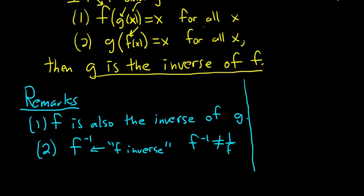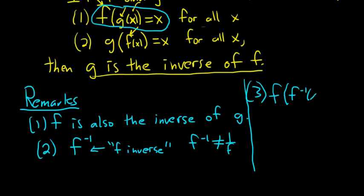The third remark is that we can rewrite our definitions using this notation. So the first condition would become f(f^(-1)(x)) = x. And now you can see it's almost like they cancel. The notation is intentional to give that illusion so that you see that you just end up with x.